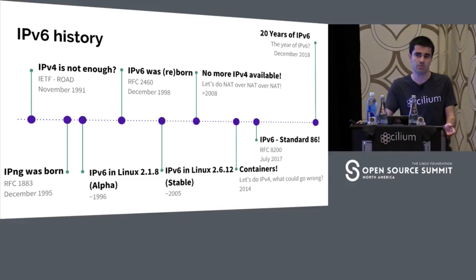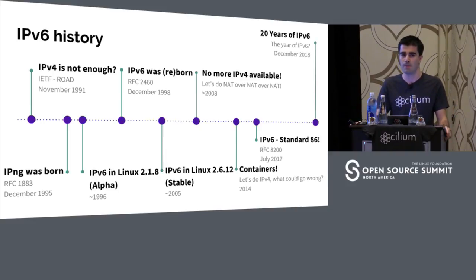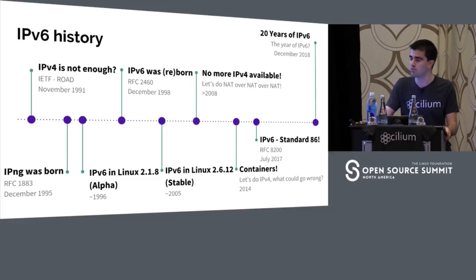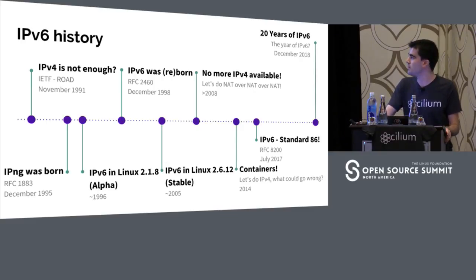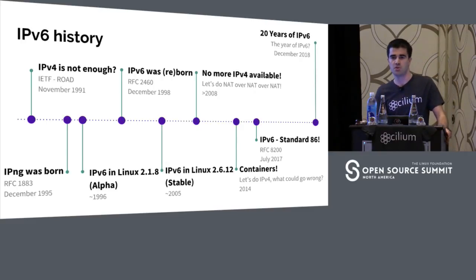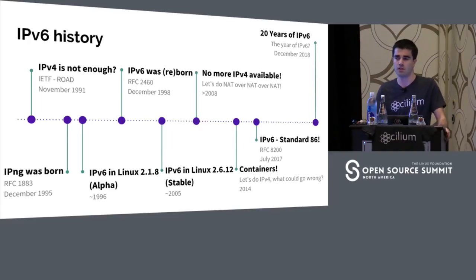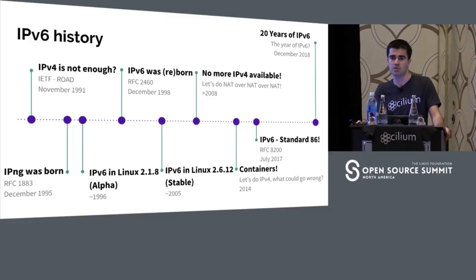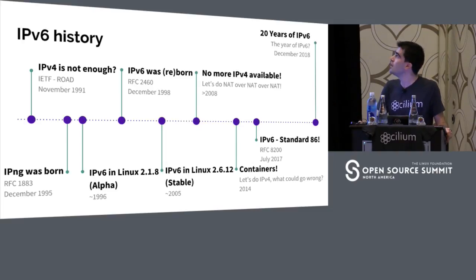Some ISPs started looking around, and they thought the best way to prevent IPv4 exhaustion was to do NAT over NAT over NAT, instead of upgrading directly to IPv6. Around 2012–2014, containers started to pop up, and they were designed to have IPv4 connectivity, not going directly to IPv6. In July this year, IPv6 was considered the internet standard number 86. And hopefully, let's see if next year, in 2018, will be the year of IPv6.